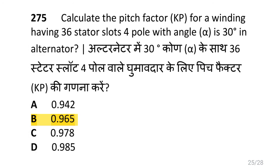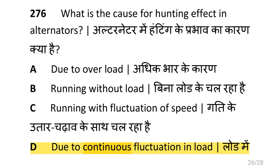Calculate the pitch factor Kp for a winding having 36 stator slots, 4 poles, with angle 30 degrees in an alternator, i.e. 0.965. What is the cause of the hunting effect in an alternator, i.e. due to continuous fluctuation in load?